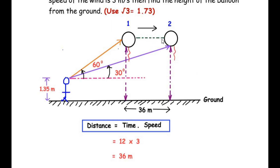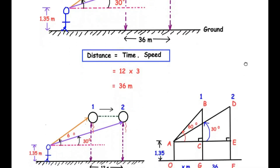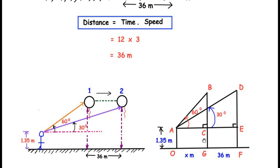Let us draw a simplified figure. Here, OGF represents the ground and OA represents the person. Points B and D represent position 1 and position 2 of the balloon respectively, and BG and DF represent the height of the balloon. The line ACE represents the line of sight going straight from the person. Points C and E are where the line of sight meets the vertical heights, forming two right-angled triangles: triangle ACB with angle A = 60°, and triangle AED with angle A = 30°.